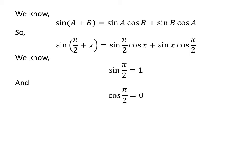We know the value of sine of half of pi is equal to 1 and cosine of half of pi is equal to 0.